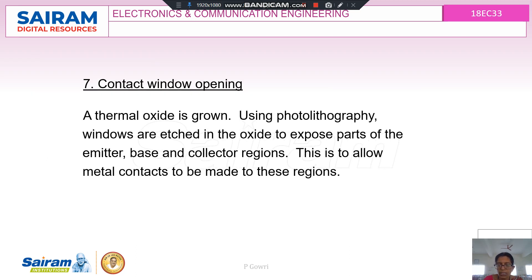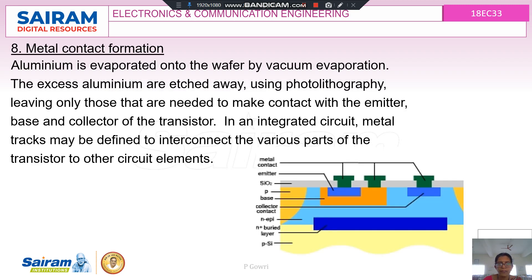After the emitter is formed, all three regions — emitter, base, and collector — are complete. For contact window opening, a thermal oxide is grown and using photolithography, windows are etched in the oxide to expose the emitter, base, and collector regions. This allows metal contacts to be made to these regions. Aluminium is then evaporated into vapour by vacuum evaporation, and the excess aluminium is etched away using photolithography, leaving contacts only at the emitter, base, and collector. In an integrated circuit, metal tracks may be defined to interconnect the various transistors to other circuit elements.